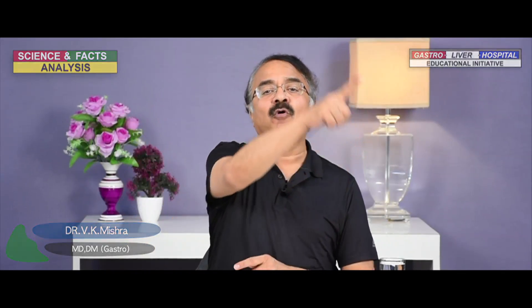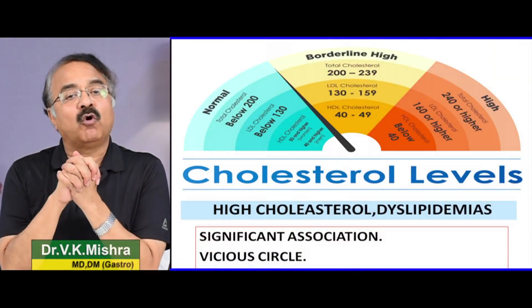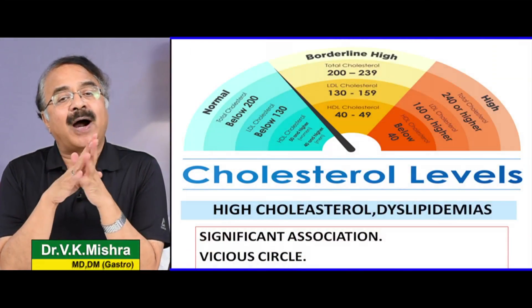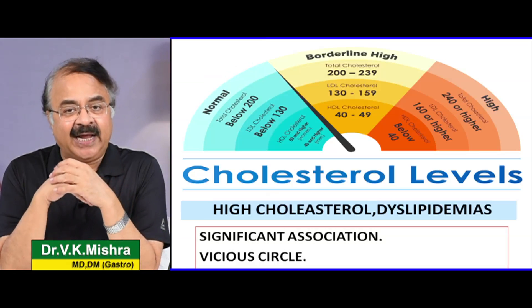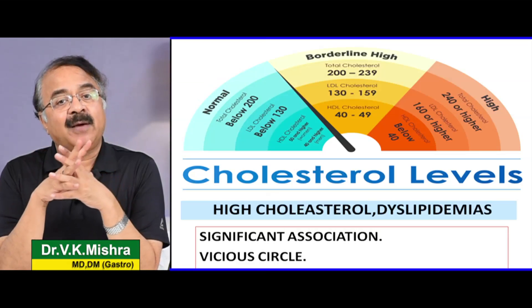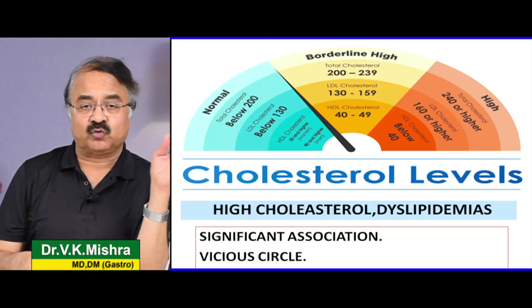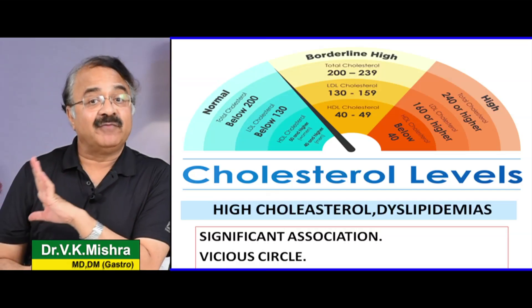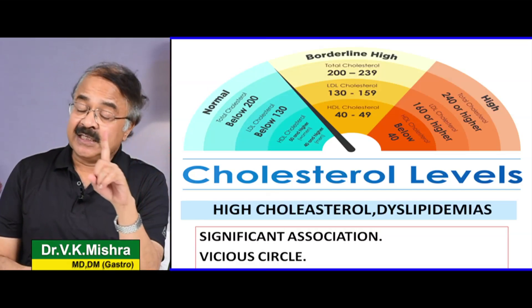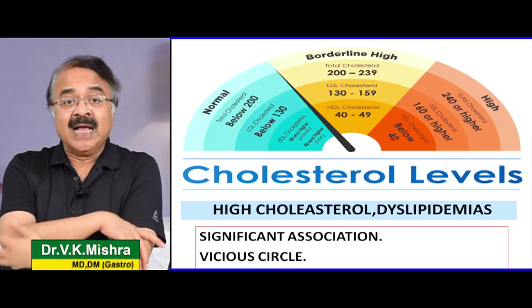अगर obesity है तो आपका cholesterol उपर जाएगा, आपकी lipids बिगड़ेंगी। It's basically a vicious circle — अगर आपको cholesterol dyslipidemia है तो आपको fatty liver होगा। अगर आप obese हैं तो आपकी पूरी lipid profile या cholesterol पूरा बिगड़ जाएगा। It's a significant association। यह एक vicious circle है, इसलिए इससे सतर्क रहने की जरूरत है।